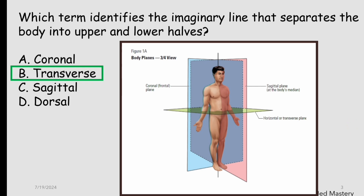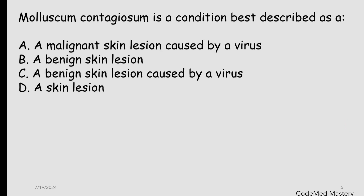For this question the right answer is option B. Next question: molluscum contagiosum is a condition best described as — option A: a malignant skin lesion caused by a virus; option B: a benign skin lesion; option C: a benign skin lesion caused by a virus; option D: a skin lesion. The right answer is option C — a benign skin lesion caused by a virus.